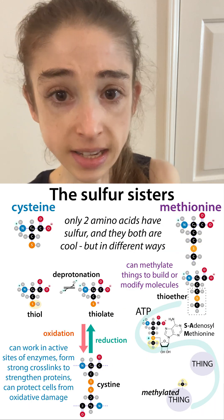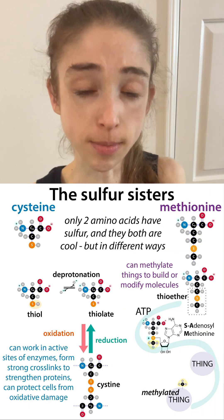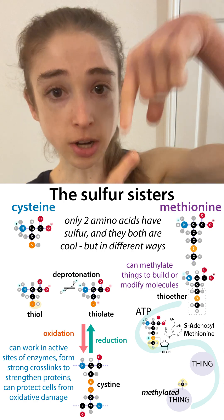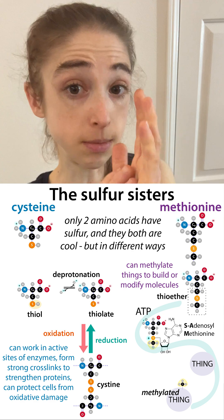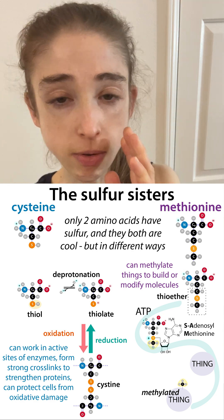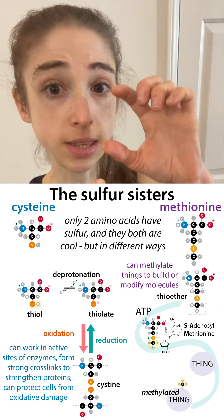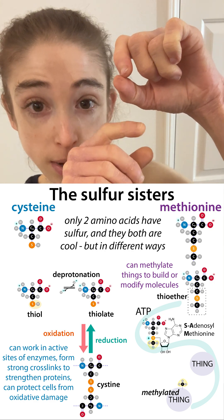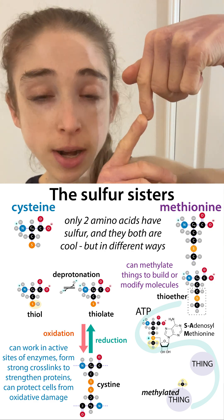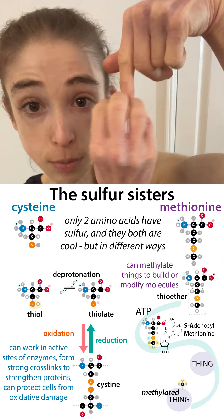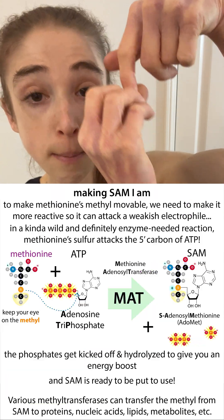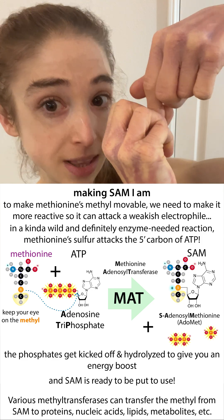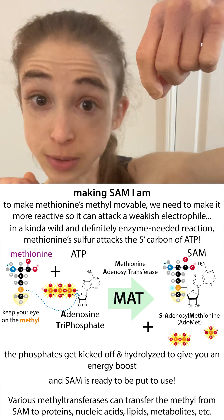We need to activate the methionine in order to transfer the methyl. If we think about methionine, we have carbon, carbon, sulfur, carbon. Methionine and cysteine are the two sulfur-containing amino acids, but with cysteine you have one shorter carbon chain and you just have the sulfur — the thiol at the bottom. With methionine you've got that methyl group, and that methyl group is what we want to move, but the sulfur is pretty happy with it right now, so we need to make the sulfur less happy with it so that when we remove it, the sulfur will still be happy.